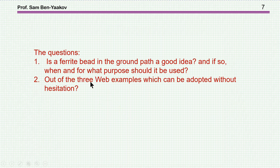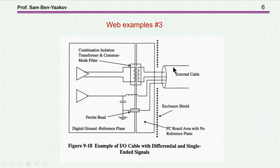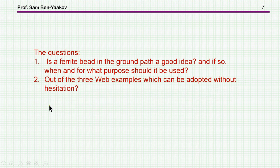So here are the questions of this riddle. Number one, is a ferrite bead in the ground path a good idea? And if so, when and for what purpose should it be used? Number two, out of the three web examples, which can be adopted without hesitation? We have three examples here. This is one example, we have the second example, and then we have the third example. And the second question is, out of the three, which can be adopted without hesitation, without any question?